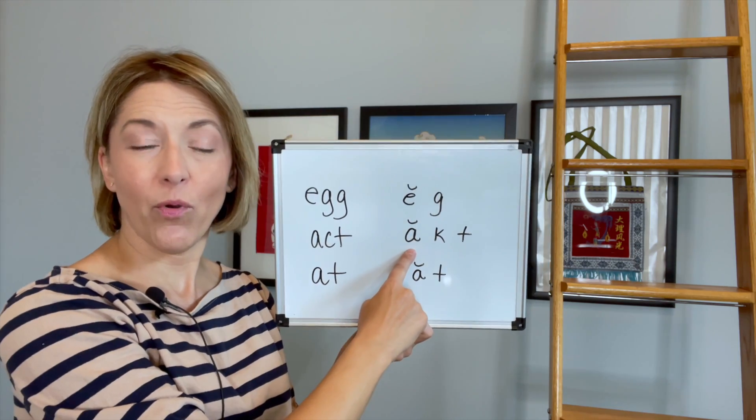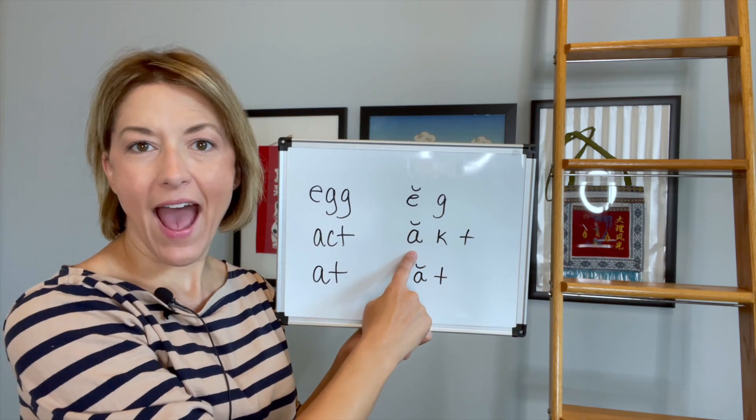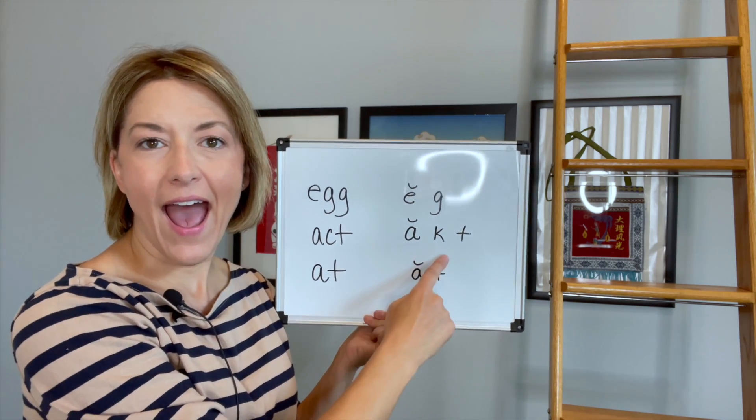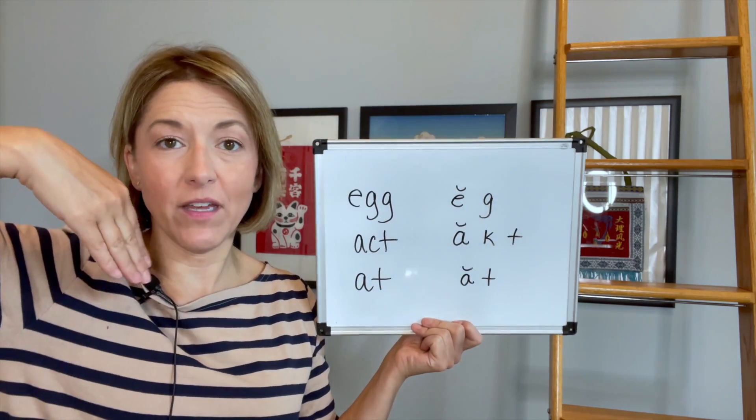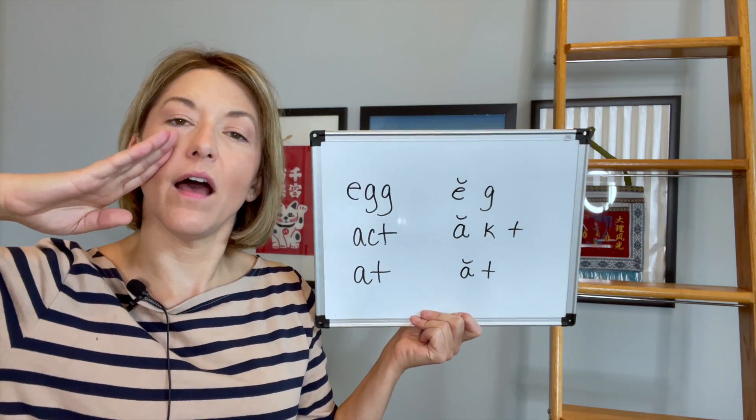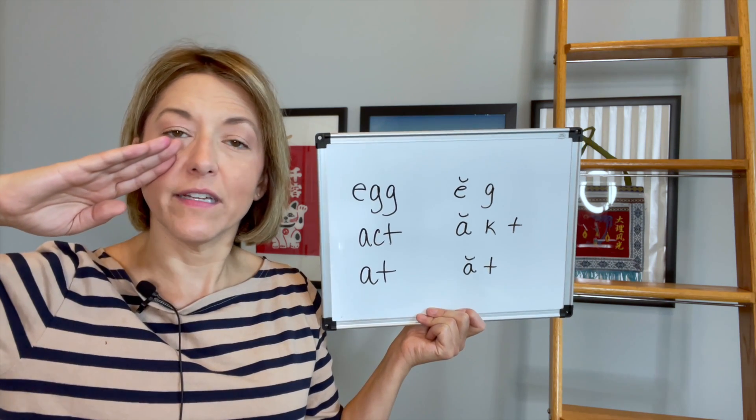I'm going to open my mouth more here: a, k, k, a, k, a, k. Then from here, from this k with the tip of my tongue down, I'm going to pull my tongue up to the back of my top front teeth.